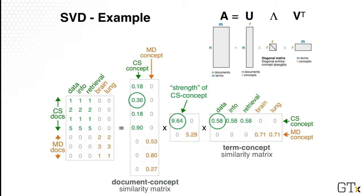And for the second matrix, the lambda matrix, here we can see that it is a diagonal matrix, and the diagonal entries are non-zero. And also, we see that they're sorted. So 9.64, that's the strength of the CS concept. And 5.29, that's the second one, which is a smaller concept for the medical documents.